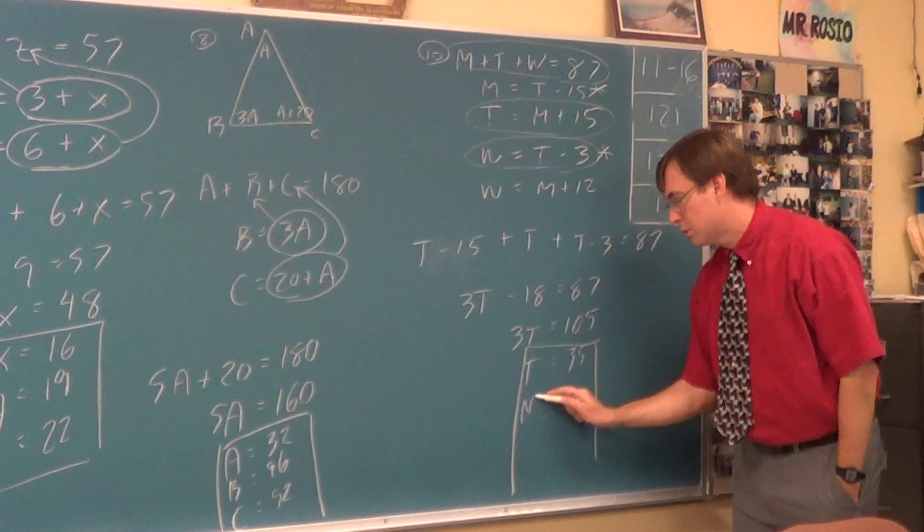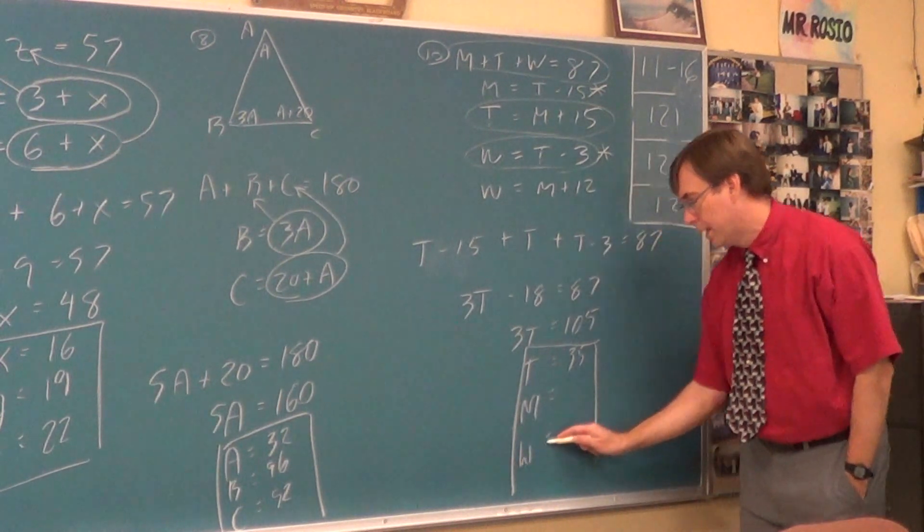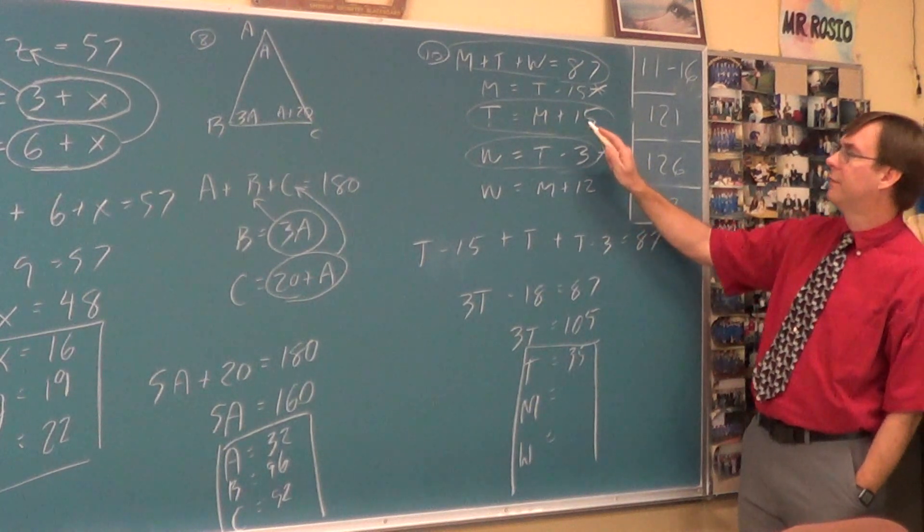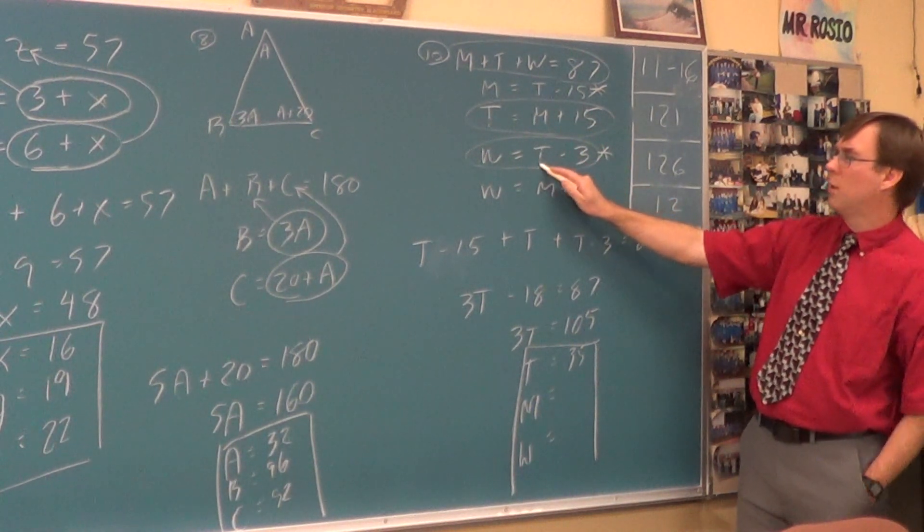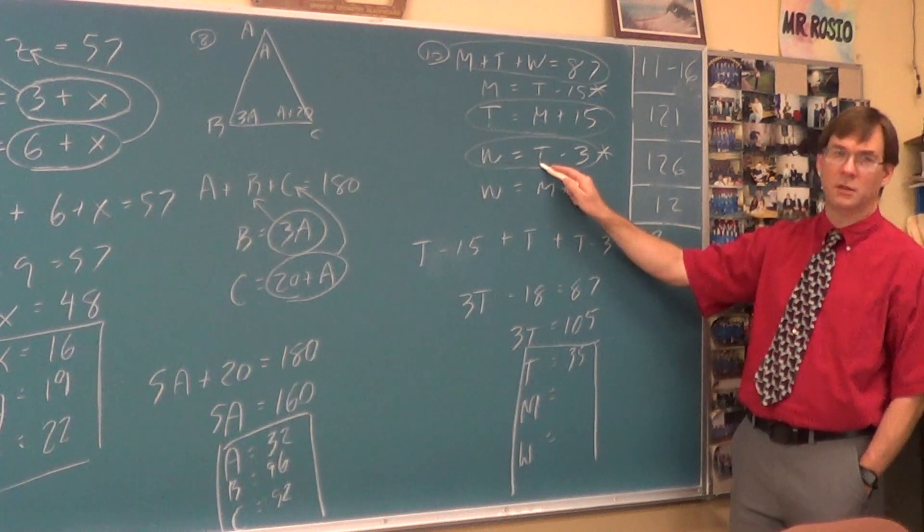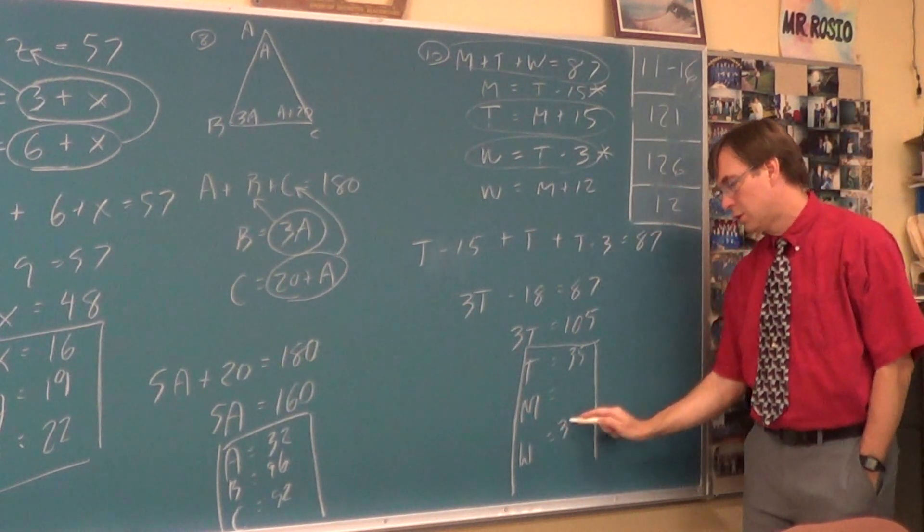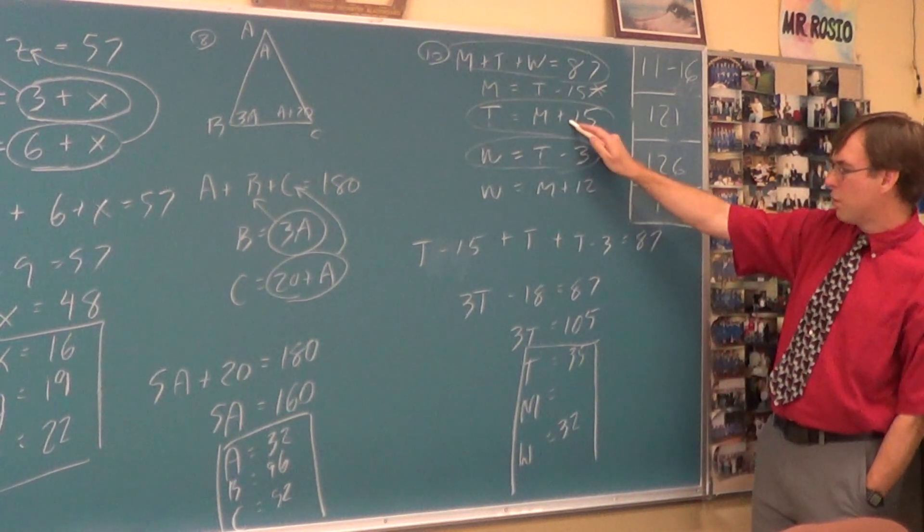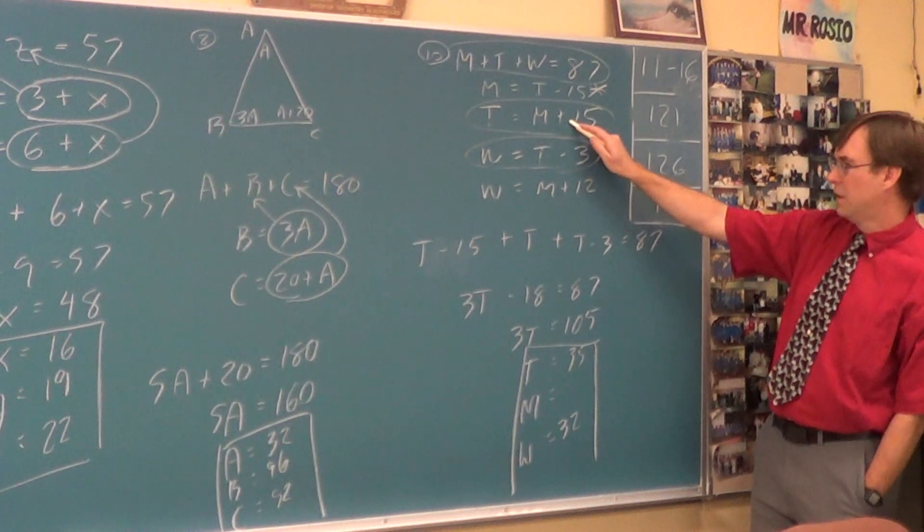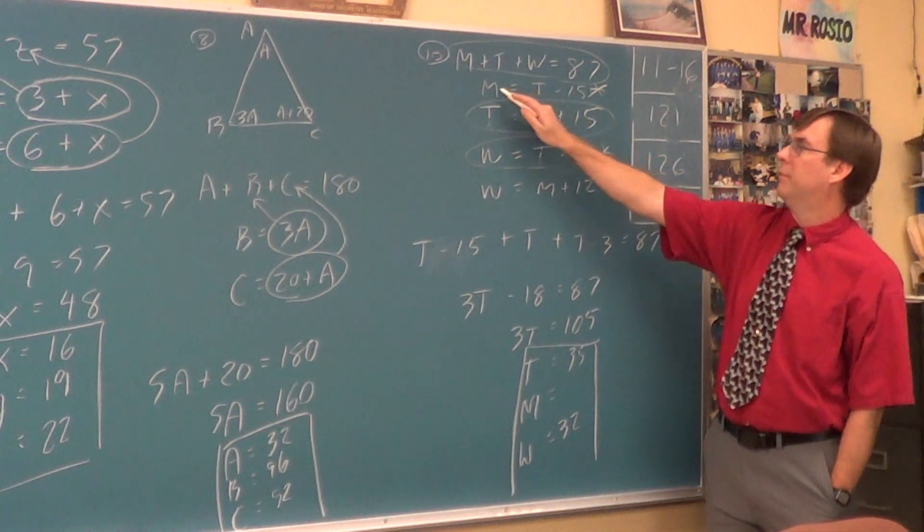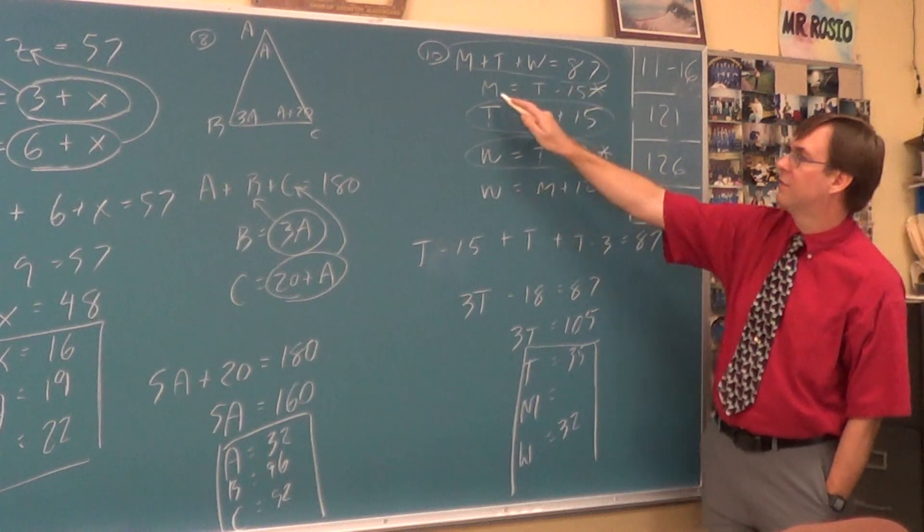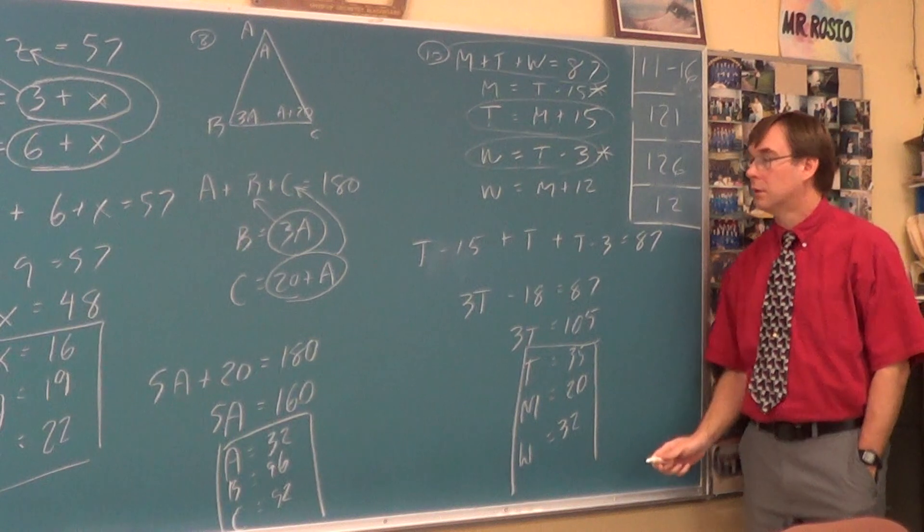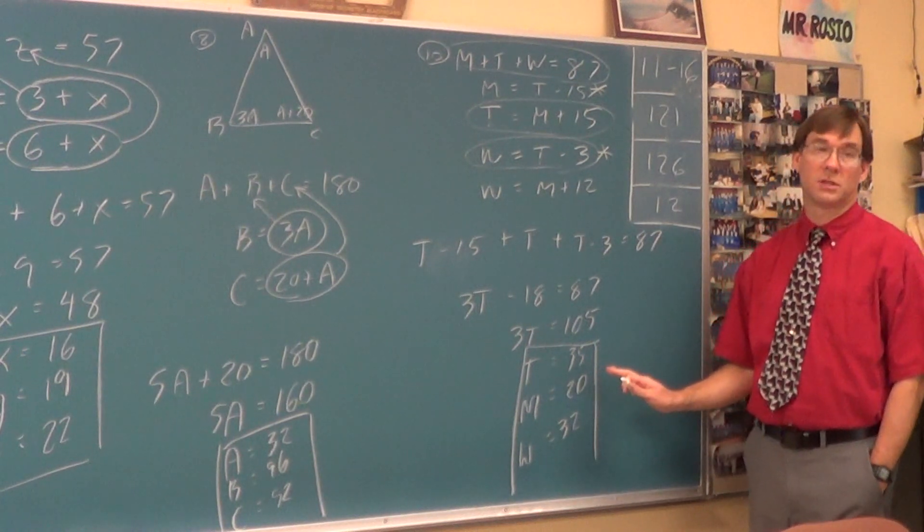So we've got Tuesday, we need Monday, and we need Wednesday. If Tuesday is 35, Wednesday was 3 fewer than Tuesday. So Wednesday is 32. Tuesday was 15 more than Monday. Tuesday subtract 15 to create Monday. Monday's going to be a 20.